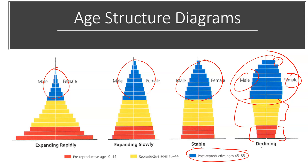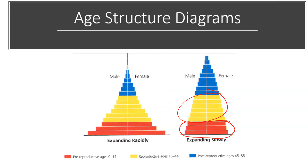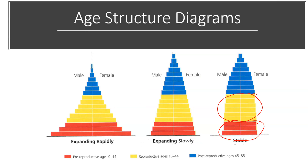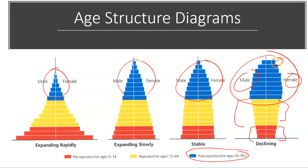What you want to be able to do is be given an age structure diagram and recognize whether the population is expanding rapidly, expanding slowly, relatively stable, or declining. The key portions to look at are the bottom two: compare the pre-reproductive age to the reproductive age. That is a pretty good indicator of fertility rates and, therefore, how fast a society will be growing in the future.